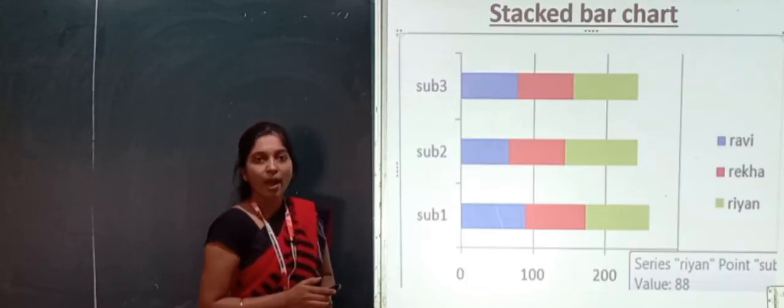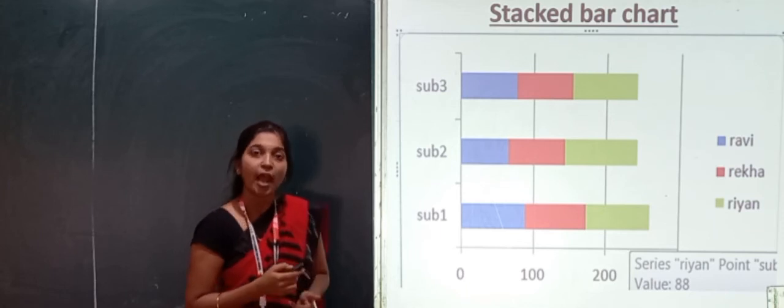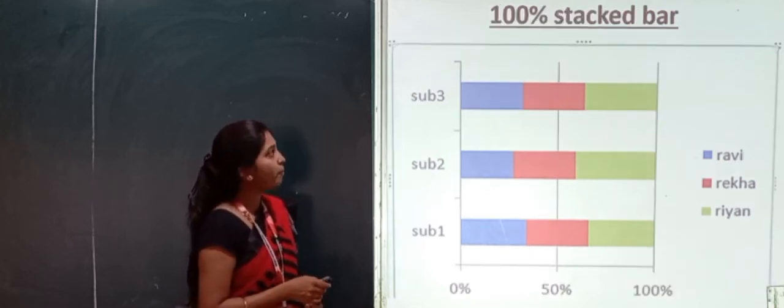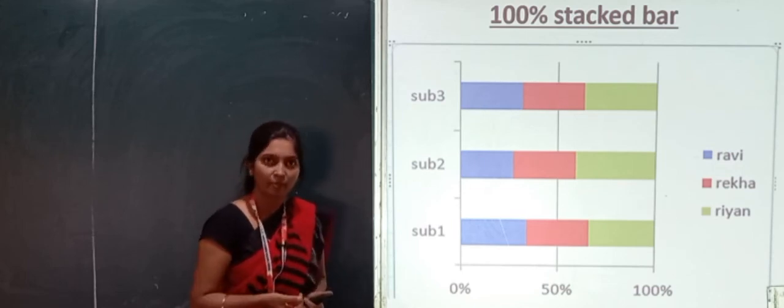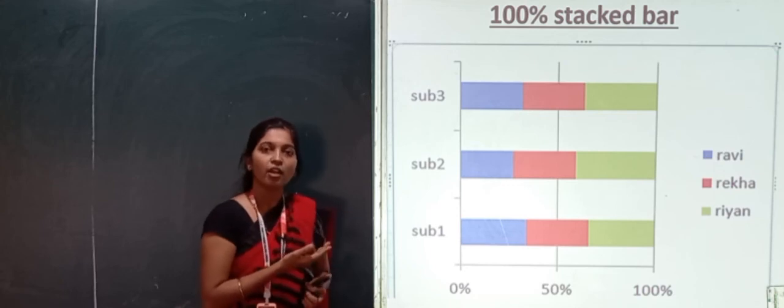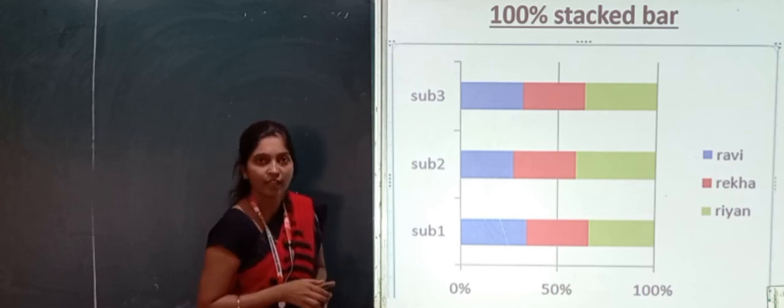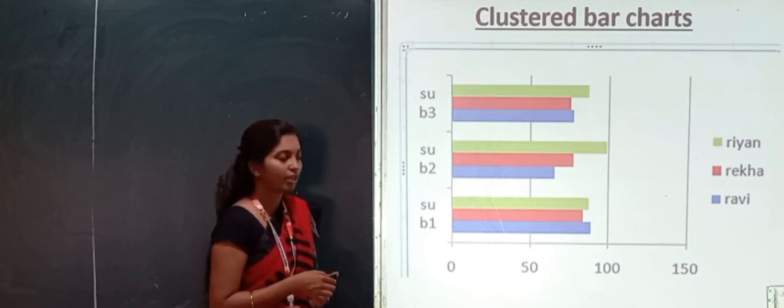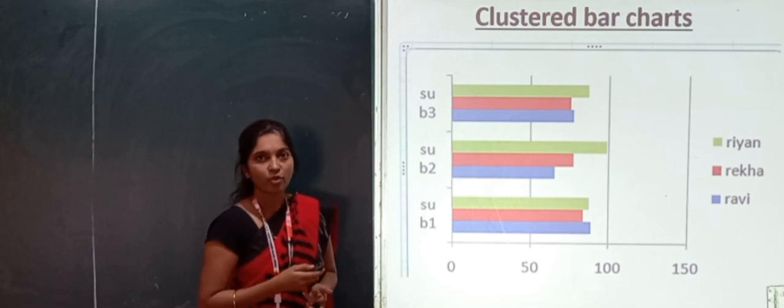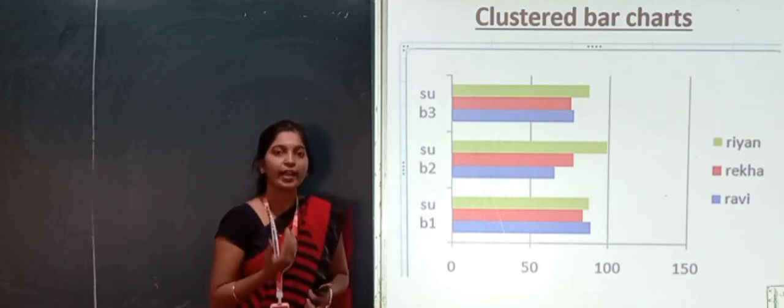This is the stacked bar chart. You can see the stacked bar chart. Next one is 100% stacked. Here we illustrate our item data comparison using the different variants of the bar. Then, clustered bar chart. Clustered data series and 100% stacked bar chart.